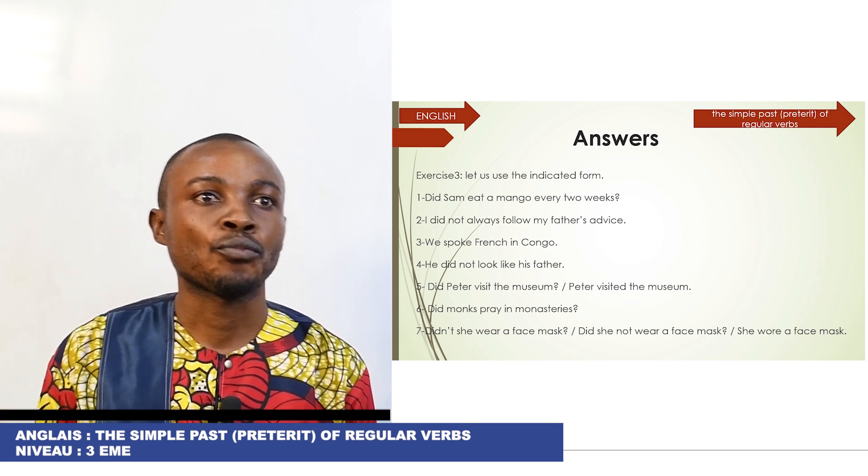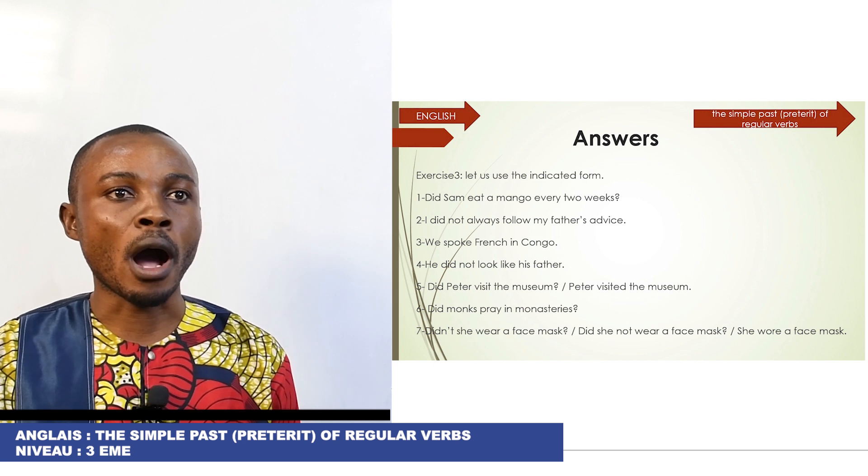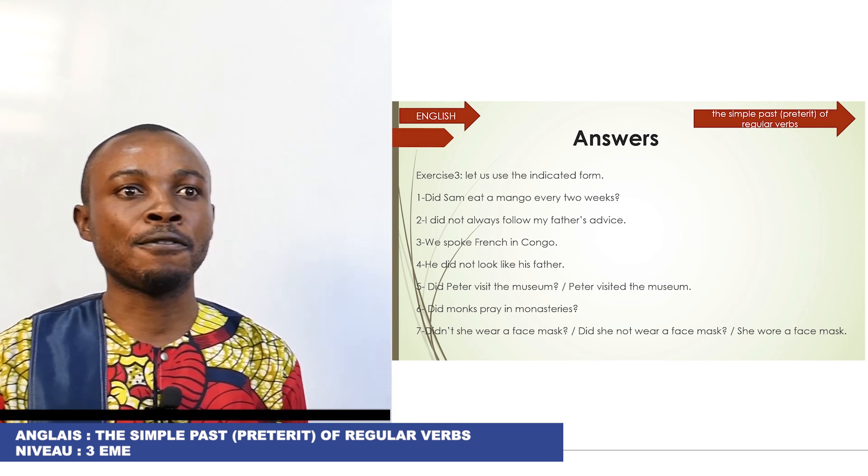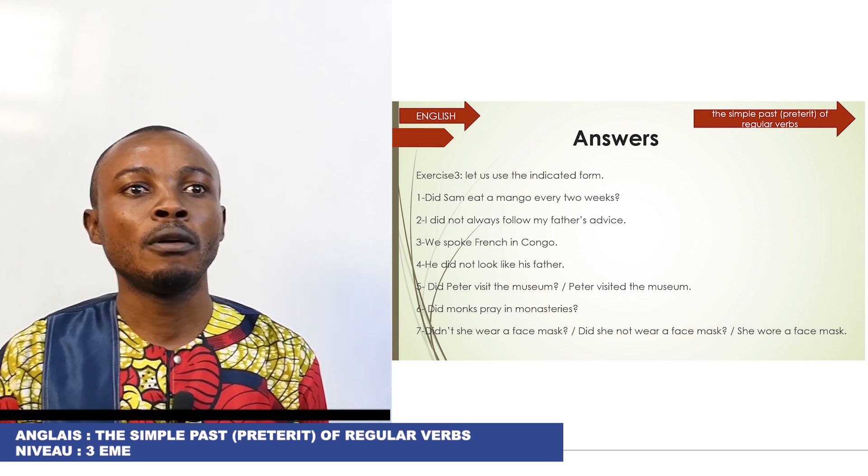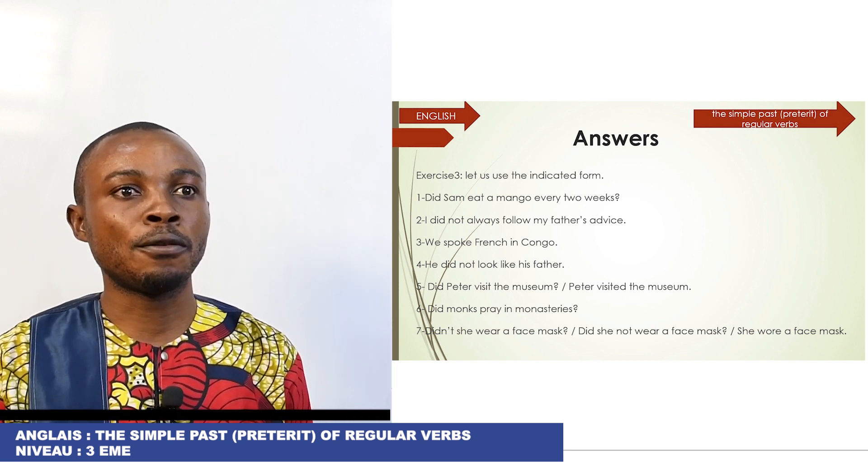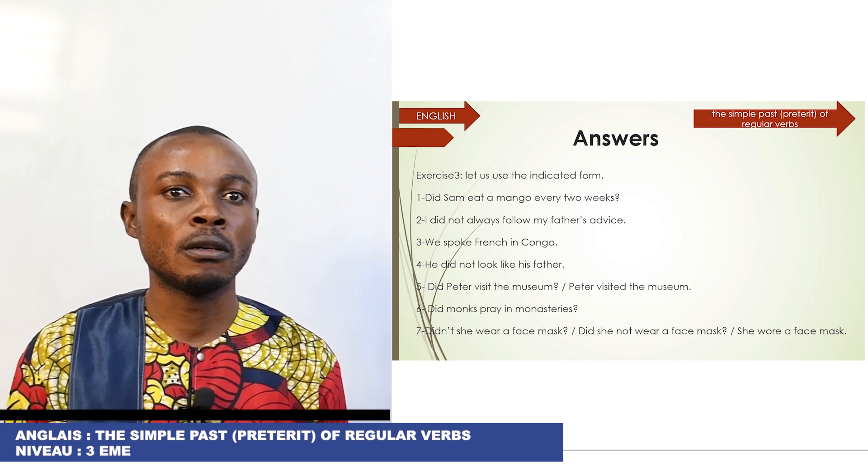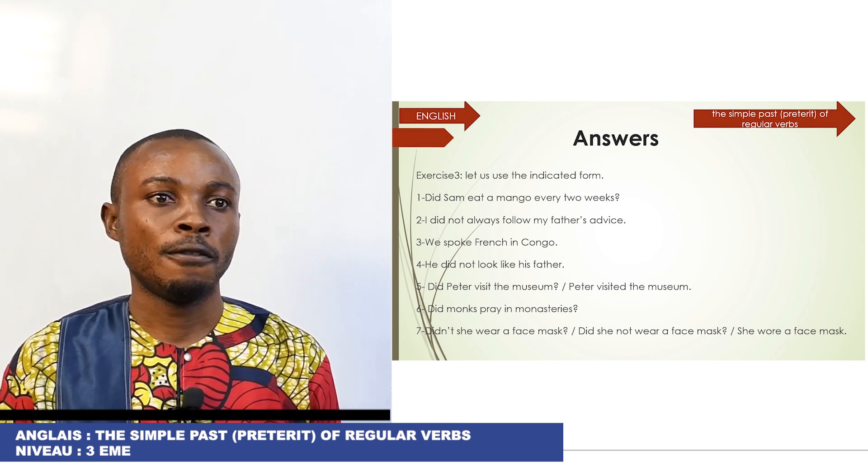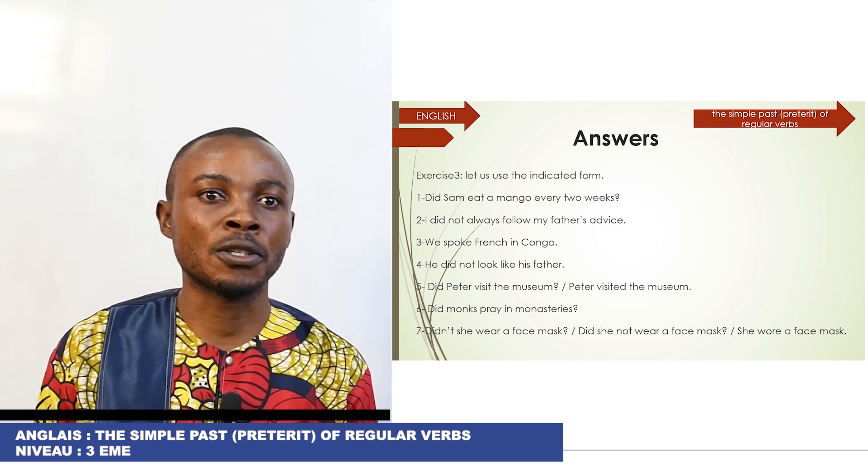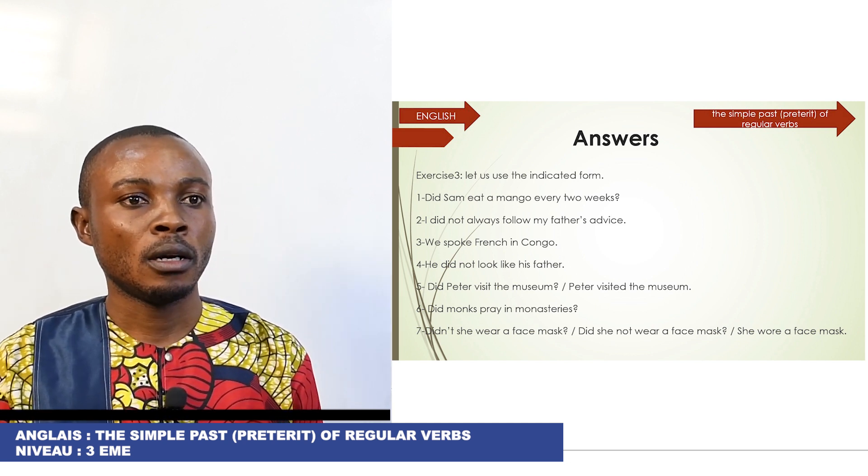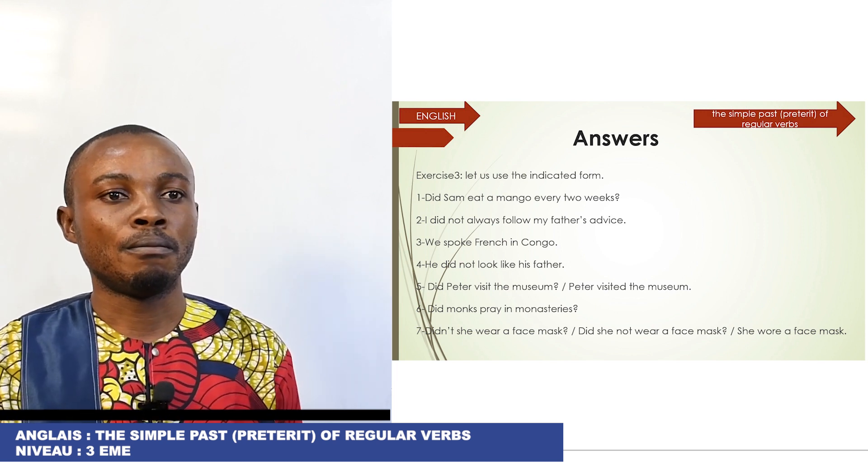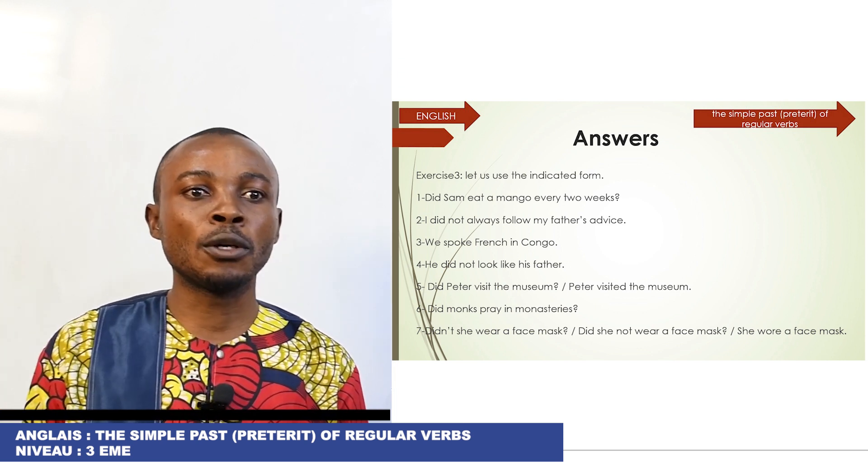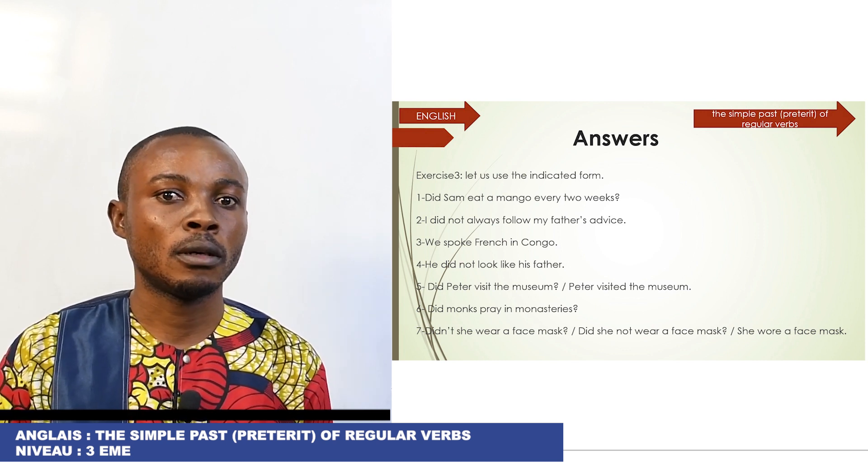Exercise number three: Put the form indicated in brackets. One: Sam ate a mango every two weeks - interrogative form. Number two: I always followed my father's advice - negative form. Three: Didn't we speak French in Congo? - Affirmative form. Four: He looked like his father - negative form. Five: Peter did not visit the museum - inter-negative form. Six: Monks did not pray in monasteries - inter-negative form. Seven: She does not wear a face mask - affirmative form.